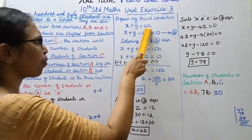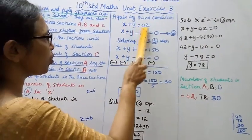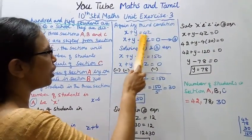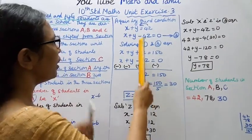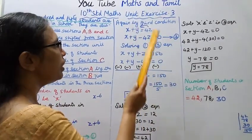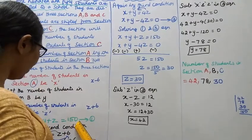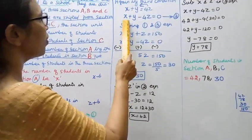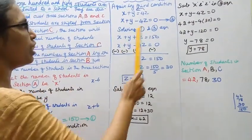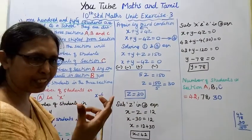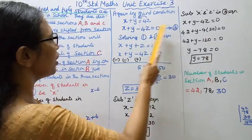By the third condition: 4 times the students of section C exceeds the number of section A by the number of students in section B, so x plus y equals 4z. The first equation is x plus y plus z equals 150, and the third equation is x plus y minus 4z equals 0.